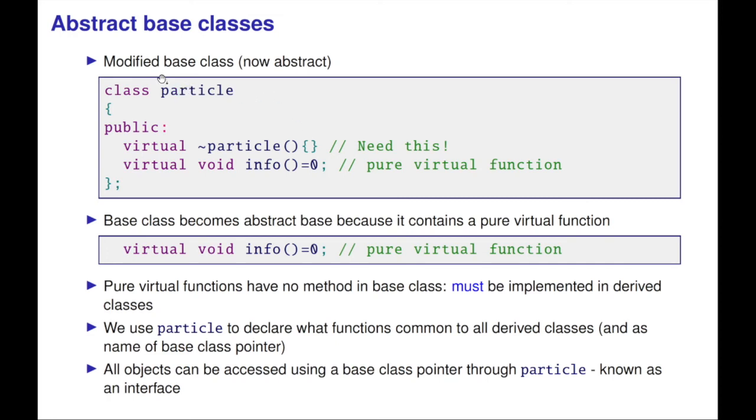Let me show you how. We modify the base class. I'm going to declare the destructor as a virtual function. I'm going to declare the info function as virtual, but I also write equal zero at the end, which makes it a pure virtual function. The base class becomes an abstract base class because it contains a pure virtual function. Pure virtual functions have no method—there's no implementation of them. They must be implemented in the derived classes. In this case, use particle to declare what functions are common to all derived classes and as a name of the base class pointer. All objects can be accessed using a base class pointer through particle, known as an interface.